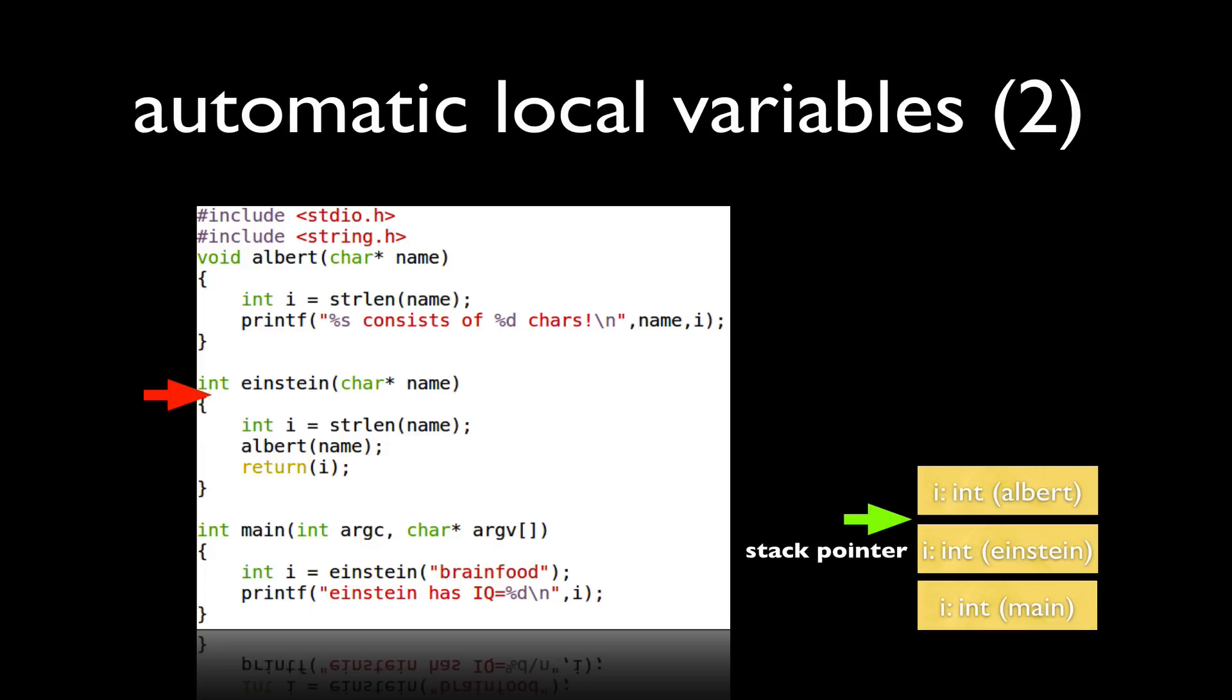When Einstein calls Albert, the same thing happens. Our stack pointer is adjusted and the int i defined in Albert also is allocated on the stack. Now there is actually more on the runtime stack than I'm showing here on the right, but just to conceptually help you understand the fact that these are indeed three different int i's even though they all share the same name.